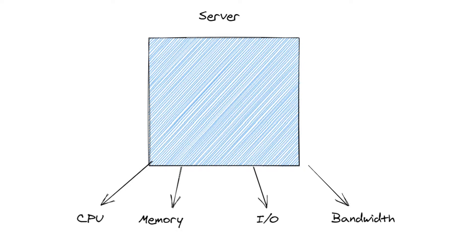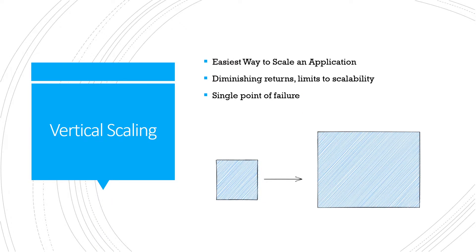The simplest way to solve these problems initially is pretty common sense: if your server is running slow, just get a bigger server. That's what vertical scaling is — you take your initial server and upgrade whatever area it's failing in, whether that's CPU, memory, or something else. Your web app then scales just fine. The problem is that there are diminishing returns and limits to scalability. Something like Google has data centers all around the world with hundreds of thousands of individual servers.